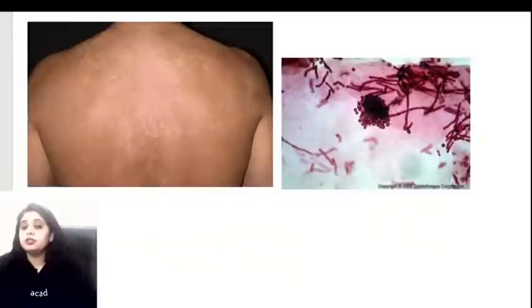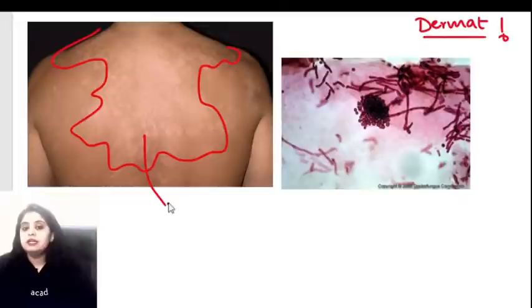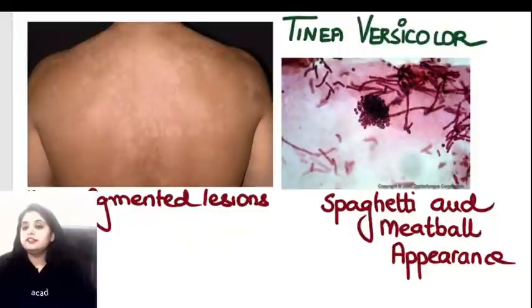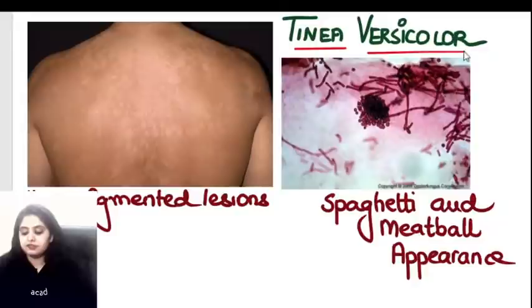Now a dermatology question. Looking at a clinical picture: on the back, I see hypopigmented lesions - the pigmentation is less. The microscopy shows a ball of dot material with long lines. This is a case of tinea versicolor. What organism causes tinea versicolor? We are talking about Malassezia furfur.